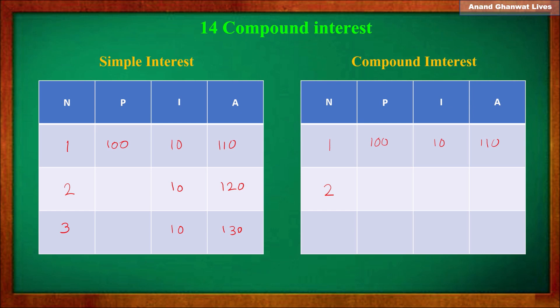In the next year, the amount of 110 becomes the new principal. Interest is now charged on this new principal of 110, so interest becomes 11, which is 10% of 110. The amount becomes 121. In the following year, 121 becomes the new principal and 10% interest on it is 12.10.